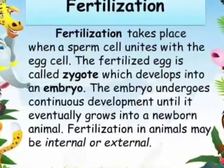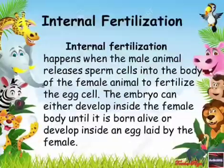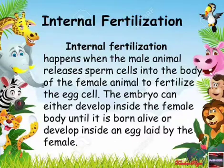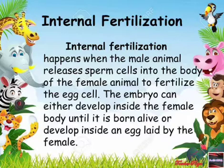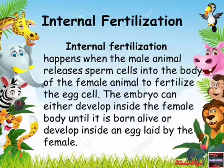The embryo undergoes continuous development until it eventually grows into a newborn animal. Fertilization in animals may be internal or external. Internal fertilization happens when the male animal releases sperm cells into the body of the female animal to fertilize the egg cell. The embryo can either develop inside the female body until it is born alive, or develop inside an egg laid by the female.